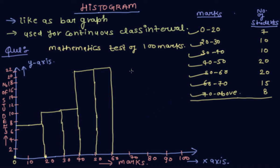60 to 70, 15 students. And 70 above, 8 students.